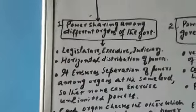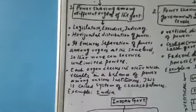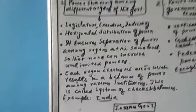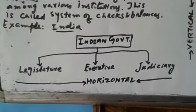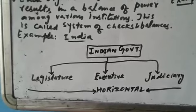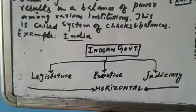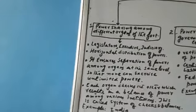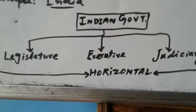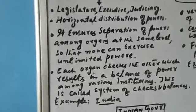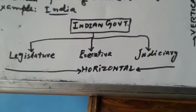First, we will discuss power sharing among different organs of government. Among the organs of government, we have three: legislature, executive, and judiciary. The legislature makes laws, the executive executes those laws, and the judiciary interprets those laws. This is called horizontal power sharing, because it operates at the same horizontal level.